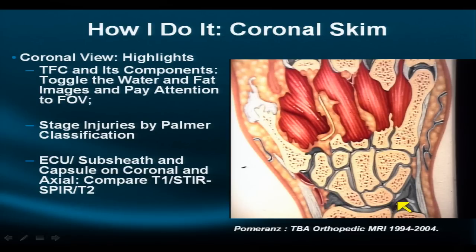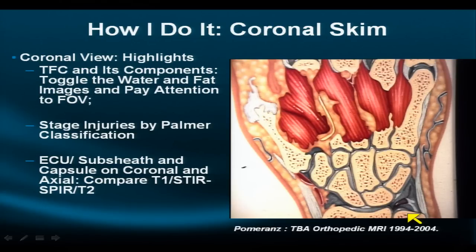Specifically, we examine the relationship of the extensor carpi ulnaris to the capsule and sub-sheath, and most importantly the relationship of the ulna to the radius and the ulna to the lunate, as affected in various abutment syndromes. We'll assess the thickness of the fibrocartilage, look for areas of perforation, fenestration, or tear, and characterize the shape, direction, and complexity of the tear. We'll decide if these abnormalities are incidental, developmental, or traumatic and symptomatic.